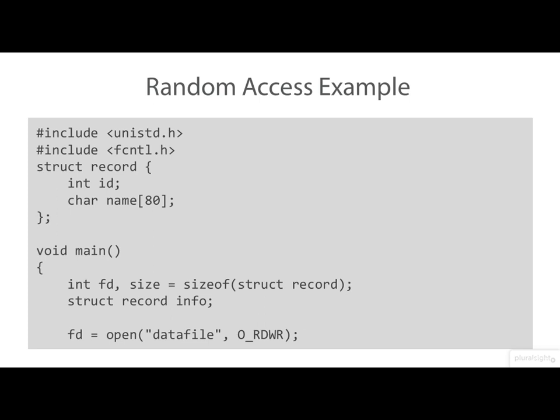Let's look at some code. What we're doing here is defining what we'll call a record, just in terms of a simple C structure, and the idea is to store an array of these records in a file. This integer variable size is being set to the number of bytes in the record.